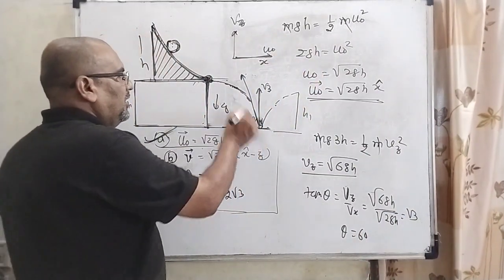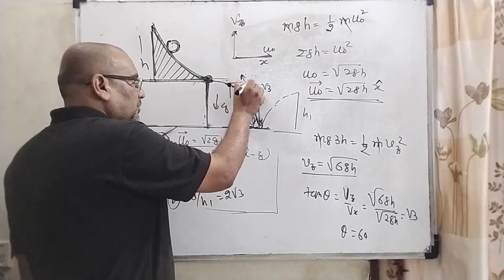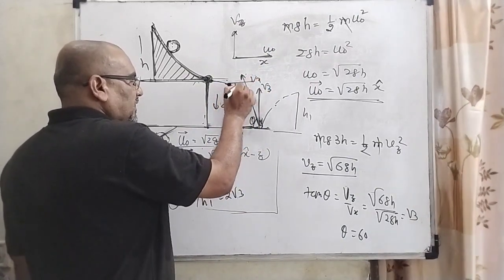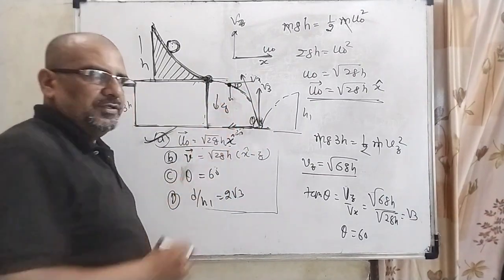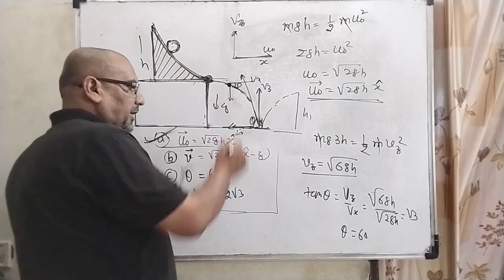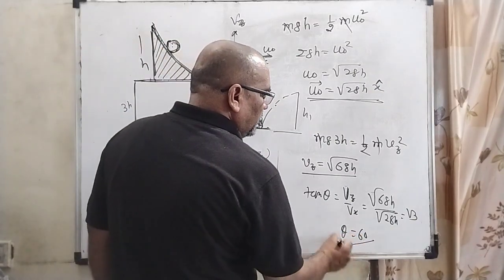Remember, we can take this point here or at this point. vx and vz are the same by using parallel displacement or parallel shifting. So theta equals 60 degrees.